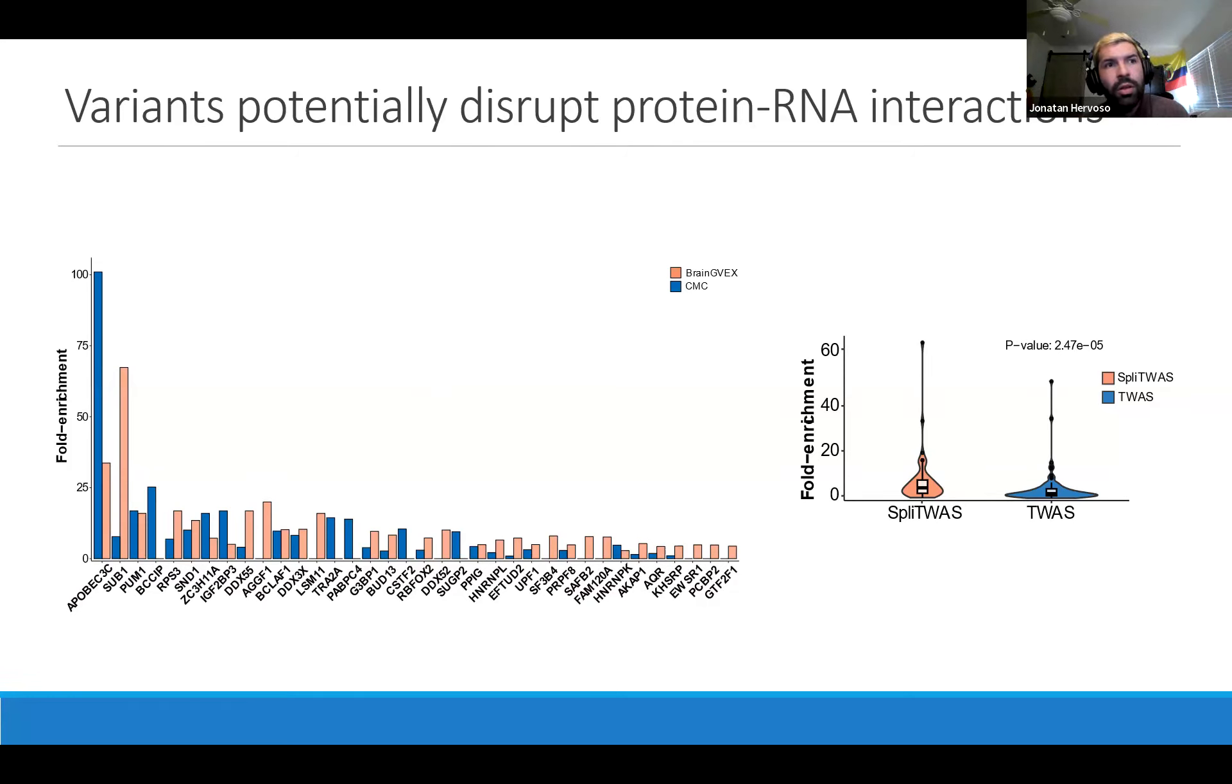Looking at a more overview and comparing this to traditional TWAS and seeing whether we were picking a unique signal to our method or looking at something that is overlapping in regular transcriptional regulation, we can see that for this cohort of RNA binding proteins, we have a higher fold enrichment in our method compared to TWAS.